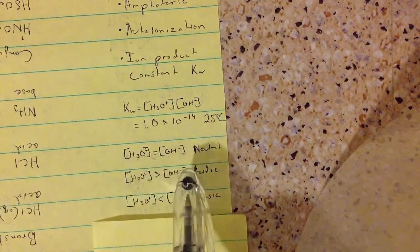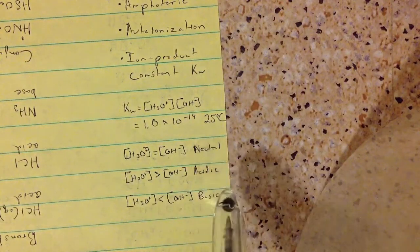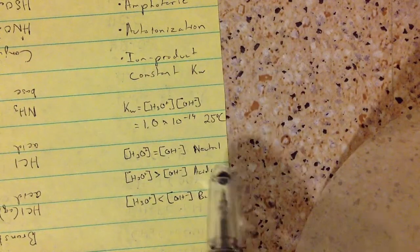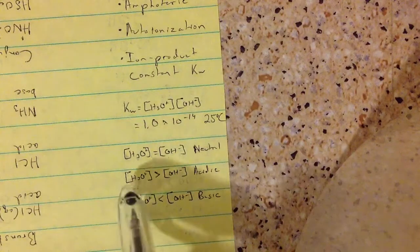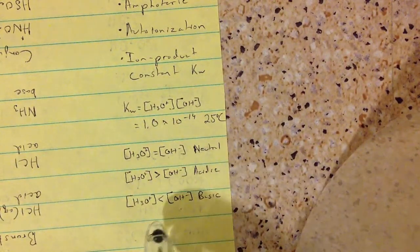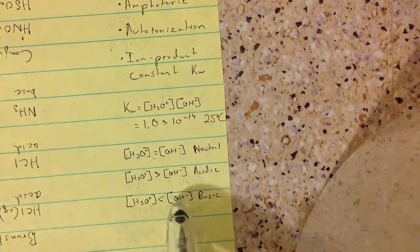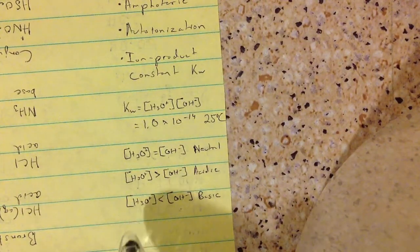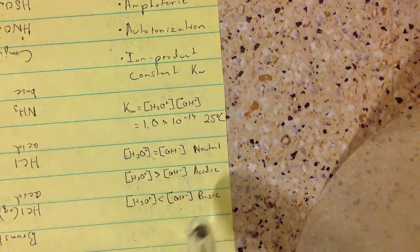When it's equal, when these concentrations are equal, the overall solution is neutral. When there's more hydronium, it's acidic, but if there's less hydronium concentration, then it's going to be basic.